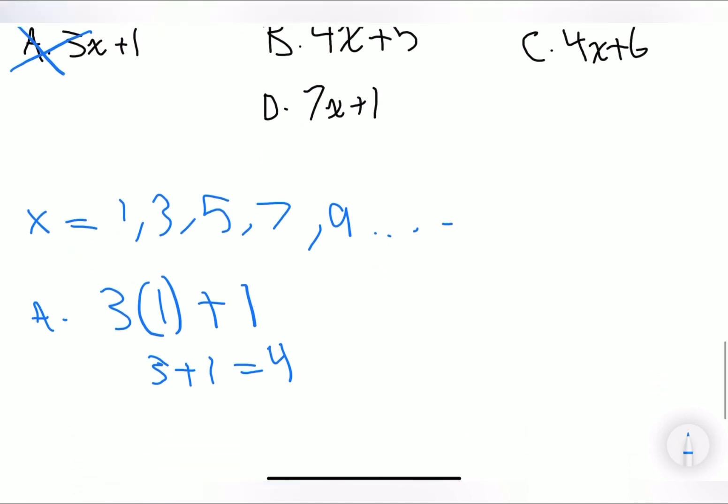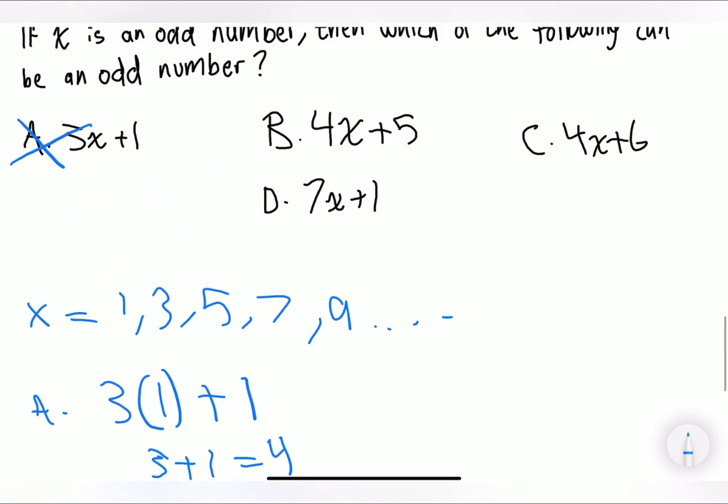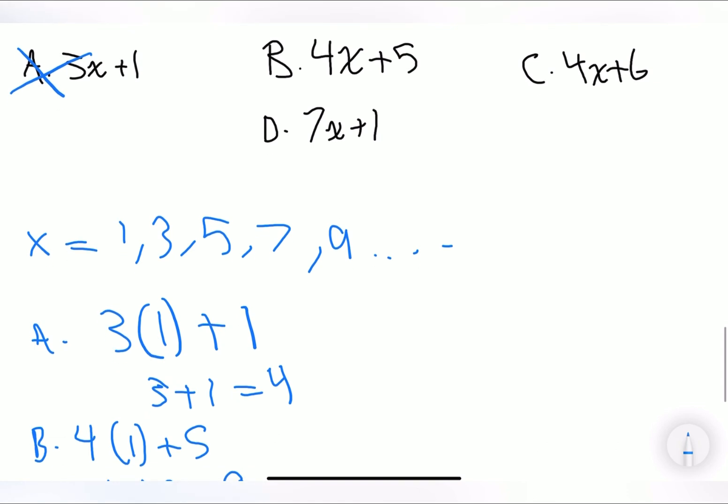Now, let's try B. B is saying 4(1) plus 5. 4 times 1 is 4, plus 5 is equal to 9, and we know that 9 is an odd number. So we automatically know that B is going to be the answer, but we're going to solve the rest so we can prove that the rest are not odd numbers.